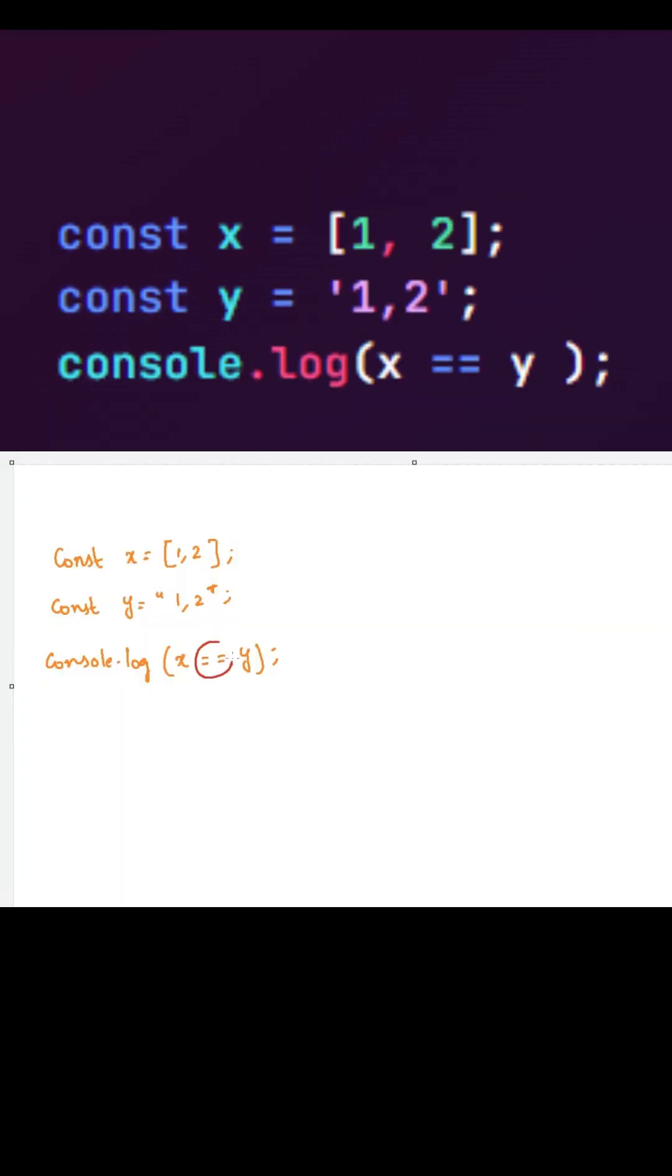Here we are using lose equality operator. First we need to understand how this lose equality operator behaves in JavaScript. Whenever we use a lose equality operator between an array and a string, JavaScript will try to convert this array into a string by using type coercion concept.